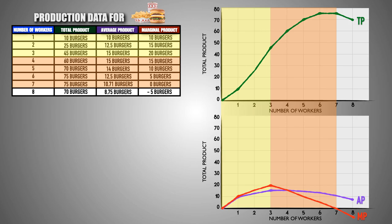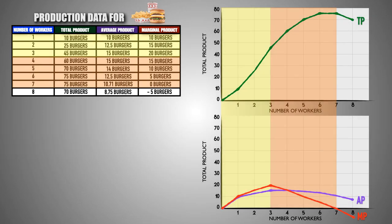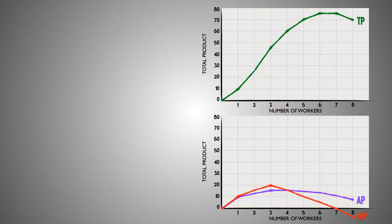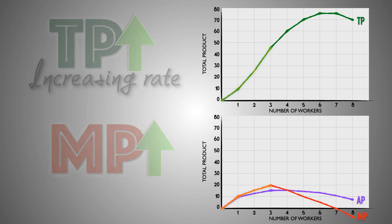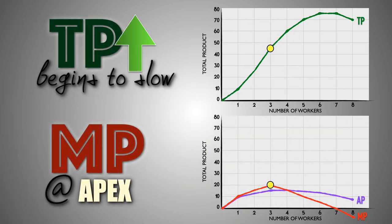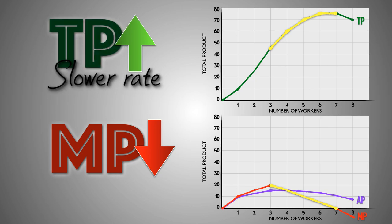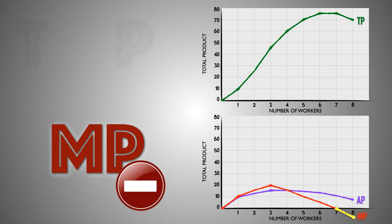Finally, the eighth worker hired by In-N-Out has a marginal product that is negative — a marginal product of negative 5 — and In-N-Out's total product begins to decrease when it hires worker 8. In-N-Out is literally losing burgers because this worker is getting in the way in the kitchen. In-N-Out is experiencing negative marginal returns with the eighth worker. When the marginal product curve is rising, the total product curve rises at an increasing rate. When the marginal product curve reaches its apex, total product stops rising at an increasing rate. When the marginal product curve begins to fall, total product rises at a slower rate. When the marginal product curve hits zero, total product reaches its apex and is maximized. When the marginal product curve becomes negative, total product begins to fall.